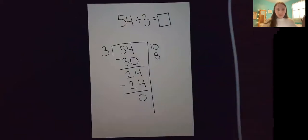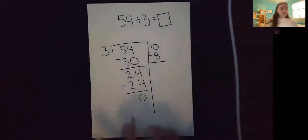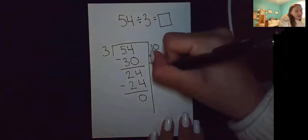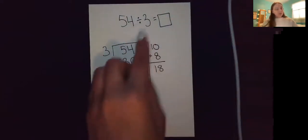And then to figure out my actual answer, I am going to add these two numbers on the outside of the seven. 10 plus eight. And I get 18, which tells me that 54 divided by three is 18.